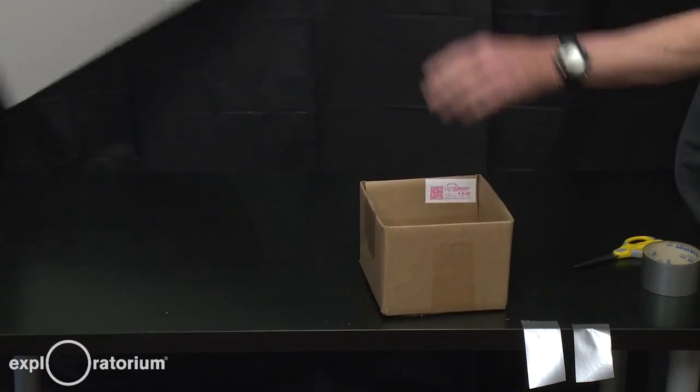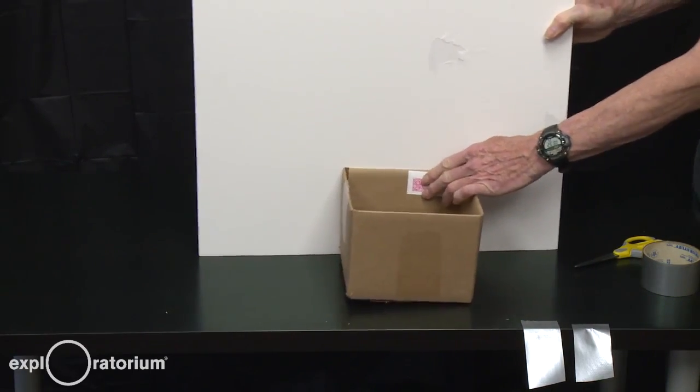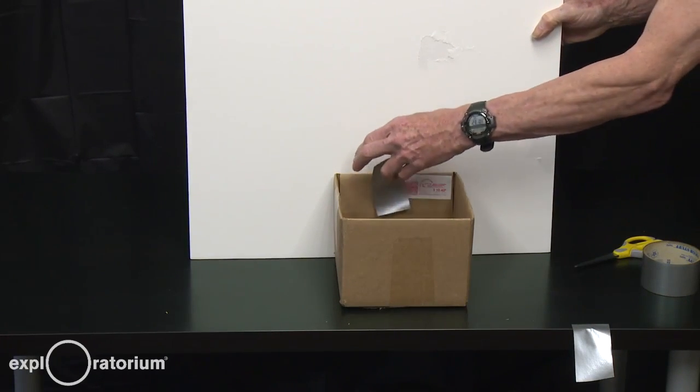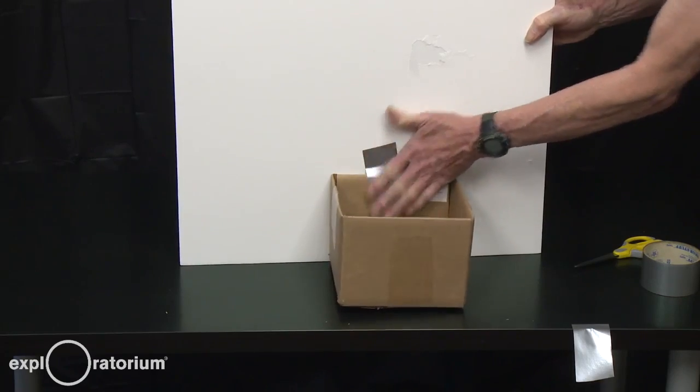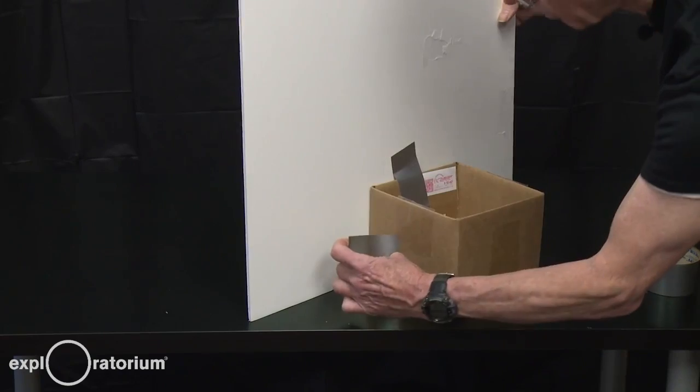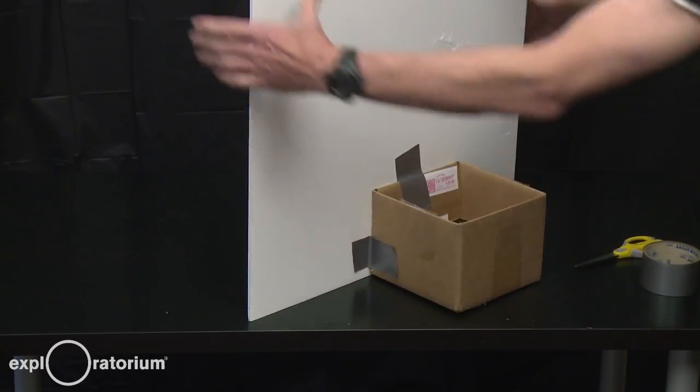Then you're going to take the foam core, push the box up against it, and use the duct tape to attach the box to the foam core. You need the second piece to keep the bottom from rolling out away from the box. And there you have it.